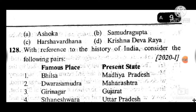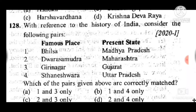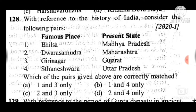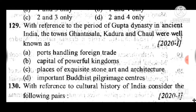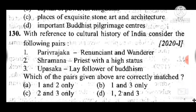Question 128: With reference to the history of India, answer is A — one and three are correct. Question 129: With reference to the Gupta period, the towns Ghantashala, Kadura, and Chaul were well known as — answer is A, ports handling foreign trade. Question 130: With reference to cultural history of India, answer is B — one and three are correct; the rest are incorrect.